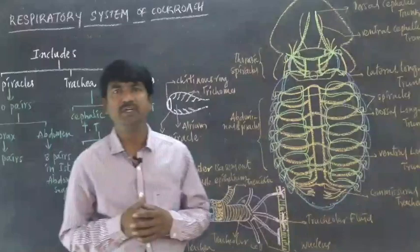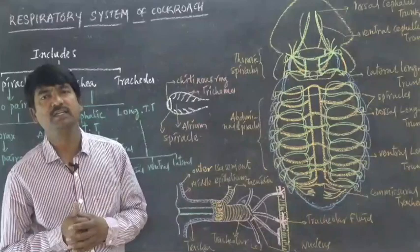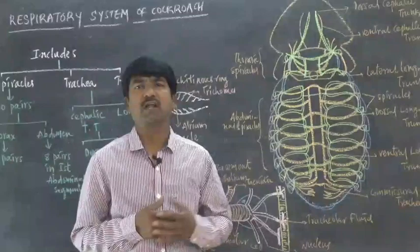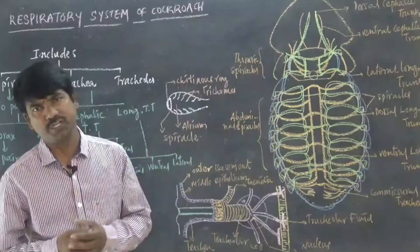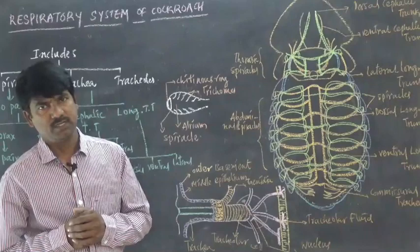The cockroach does not contain any respiratory pigment in the blood, so blood is a colorless fluid. Due to the absence of respiratory pigment, it cannot transport oxygen to the various parts of the body. After utilization, oxygen is converted to carbon dioxide, which has to be released outside by the respiratory system. But in cockroach, that process via blood is absent.